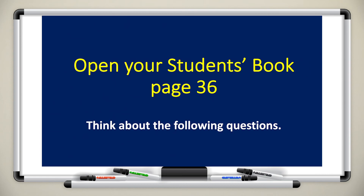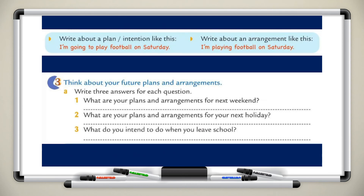Now open your student's book and think about the following questions in exercise three. Write three answers for each: What are your plans and arrangements for next weekend? What are your plans and arrangements for your next holiday? What do you intend to do when you leave school? Use the appropriate future tense words for plans and arrangements, and check your answers by replaying the video.